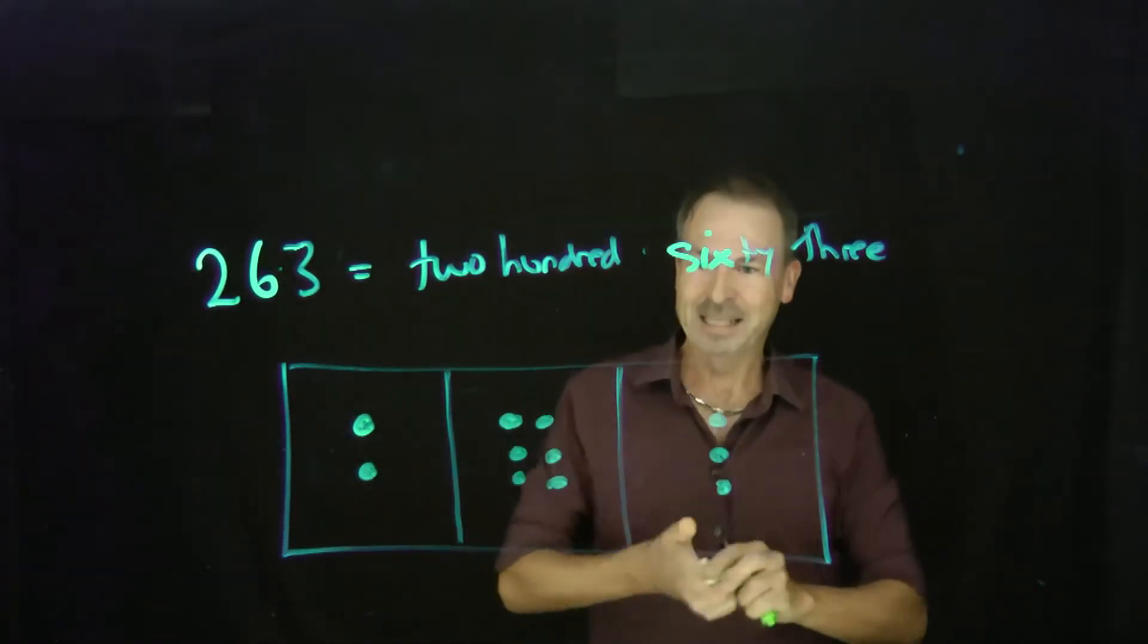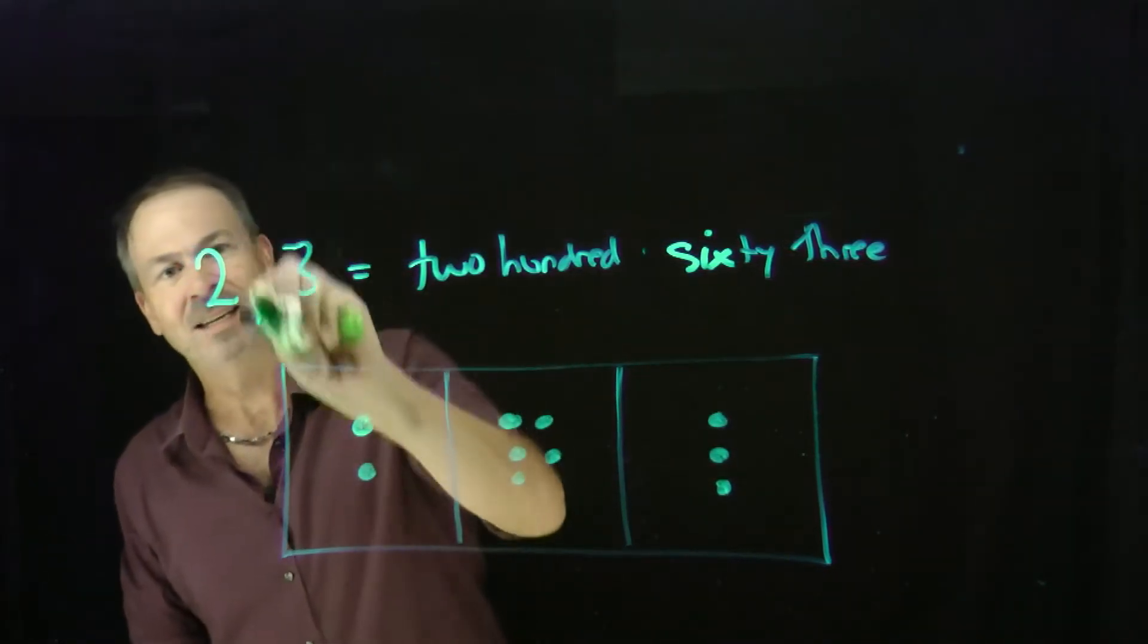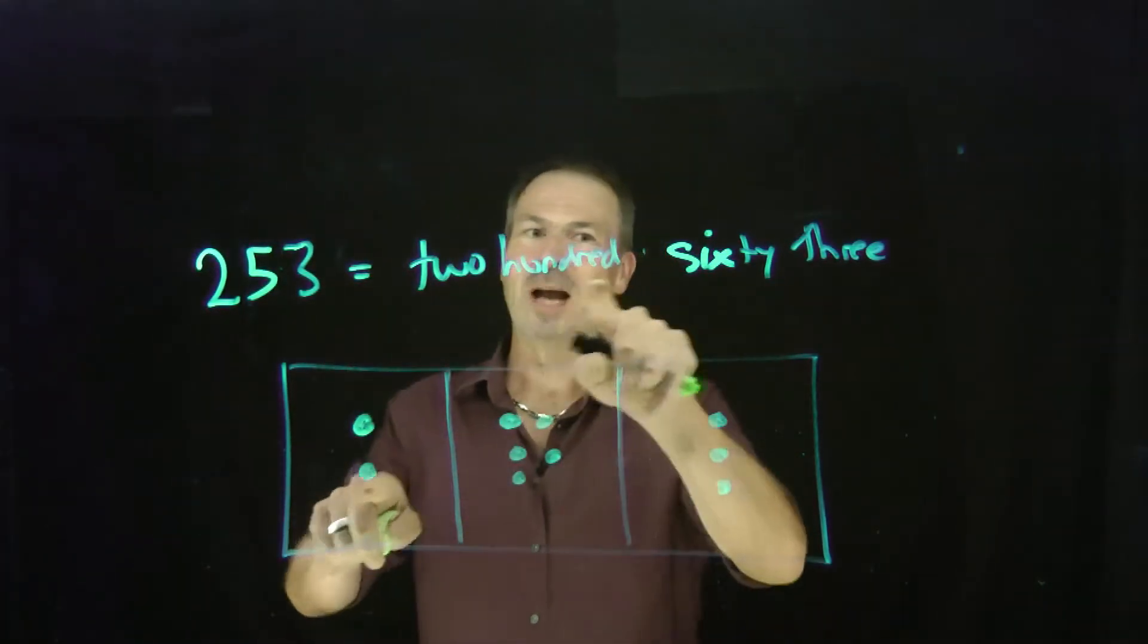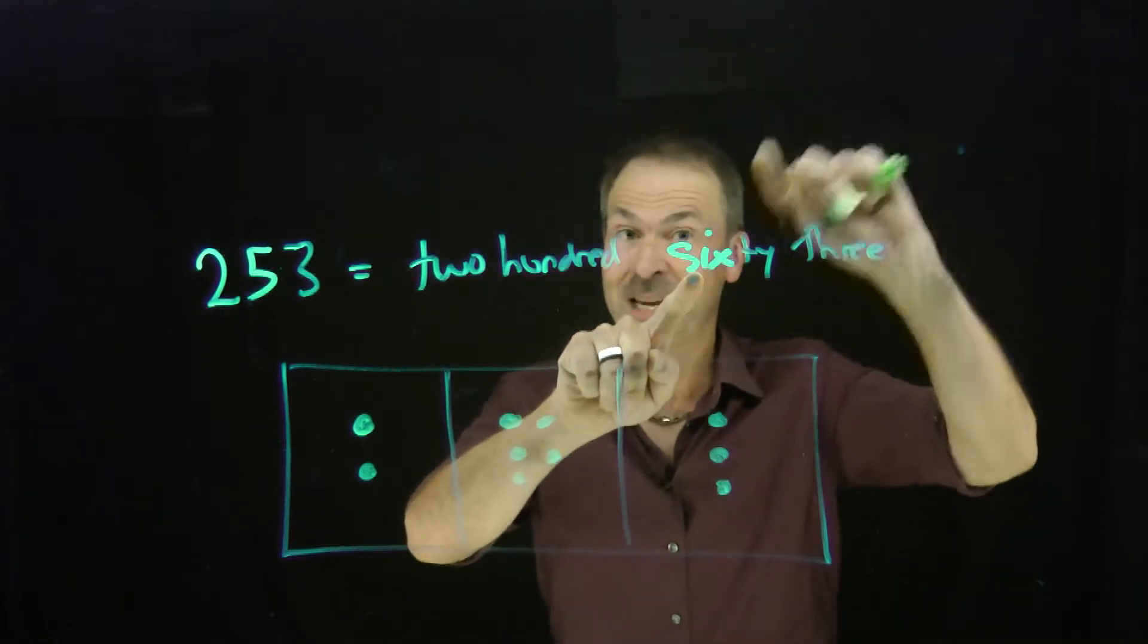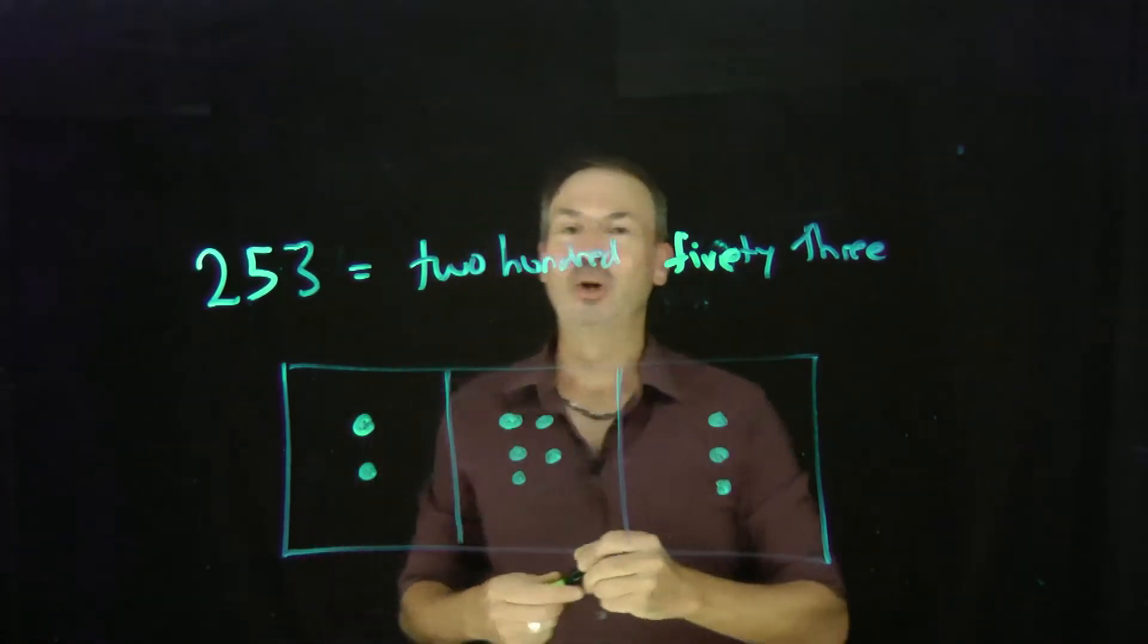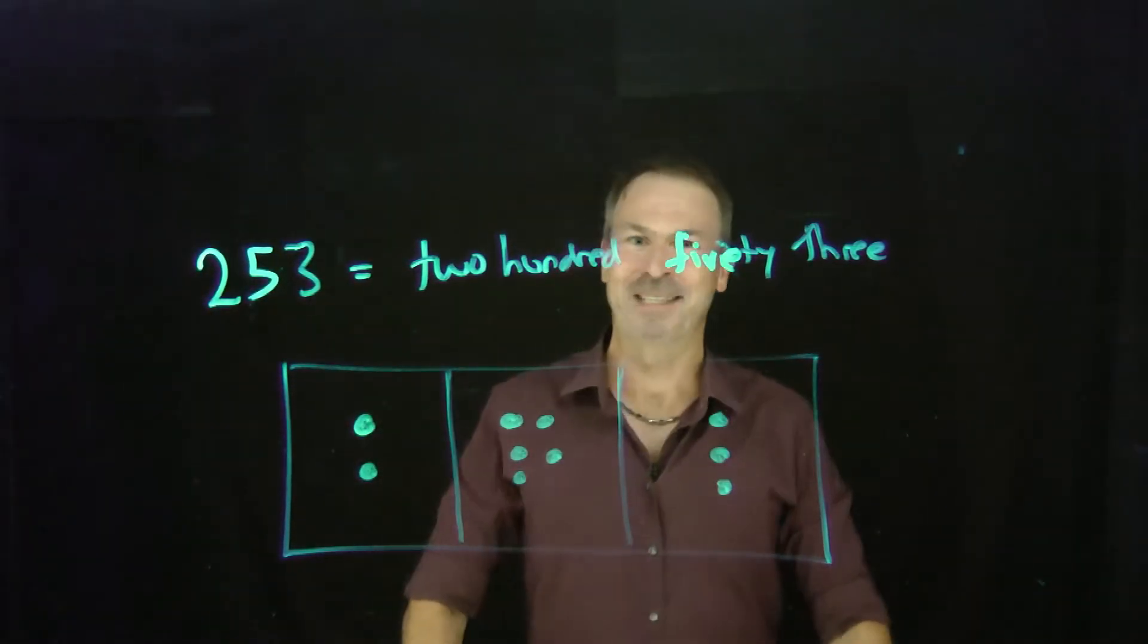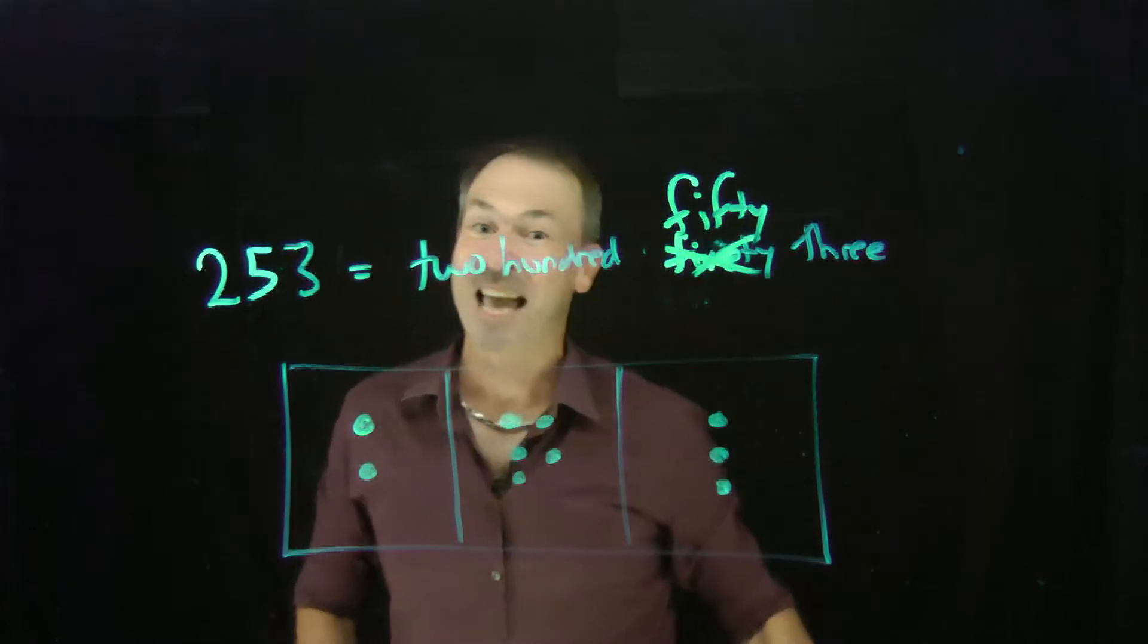Alright. Let's take away another one of these dots from the tens place. Let's make this a 5 instead. And now how do we say and write this number? We say 200 and... Well, if English were consistent, we said 70, then we said 60. We should say 5T. We should say 5T. 253. But no, no one says 5T. Don't be silly, James. We have to say 50 instead. That's actually weird.